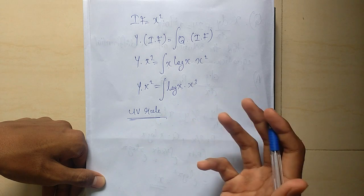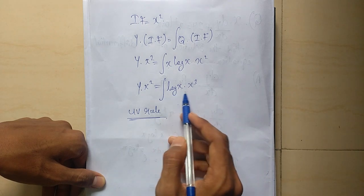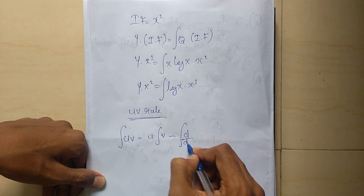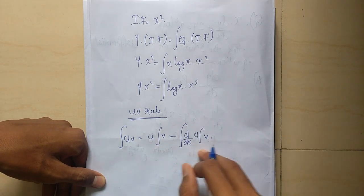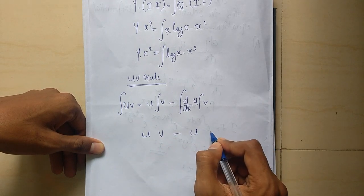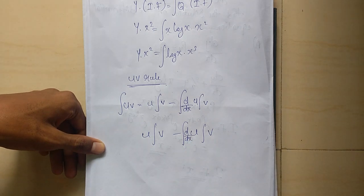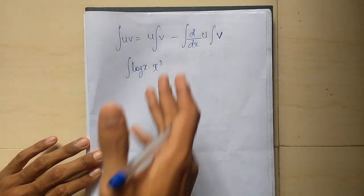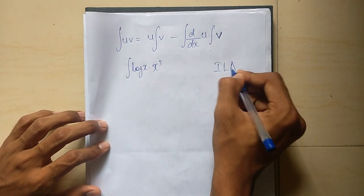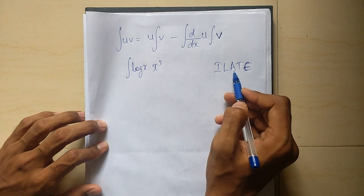The formula for integration by parts is: u into integral of v minus integral of d by dx of u into integral of v. To choose u and v, we follow the ILATE order: Inverse, Logarithm, Algebra, Trigonometry, Exponential.